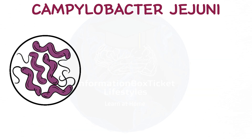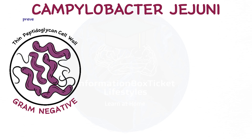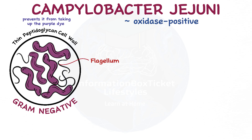Let's now discuss the anatomy and physiology of microbes. Gram-negative Campylobacter jejuni is a comma-shaped bacteria with a thin peptidoglycan cell wall that prevents it from taking up the purple dye when gram-stained, giving it a pink or red appearance instead. It is a motile bacteria because it possesses a flagellum at one end that it utilizes to move around. It is also oxidase positive, which means that it can use oxygen to produce ATP, or stored energy.